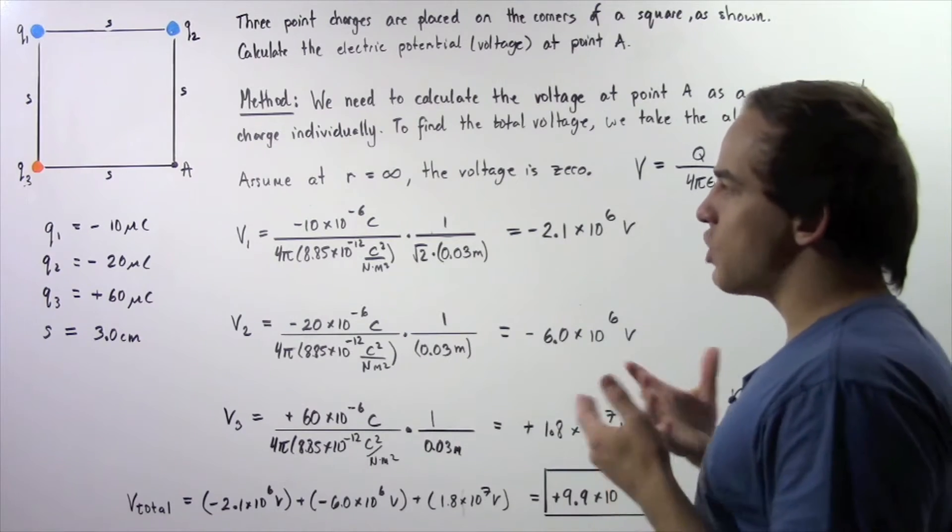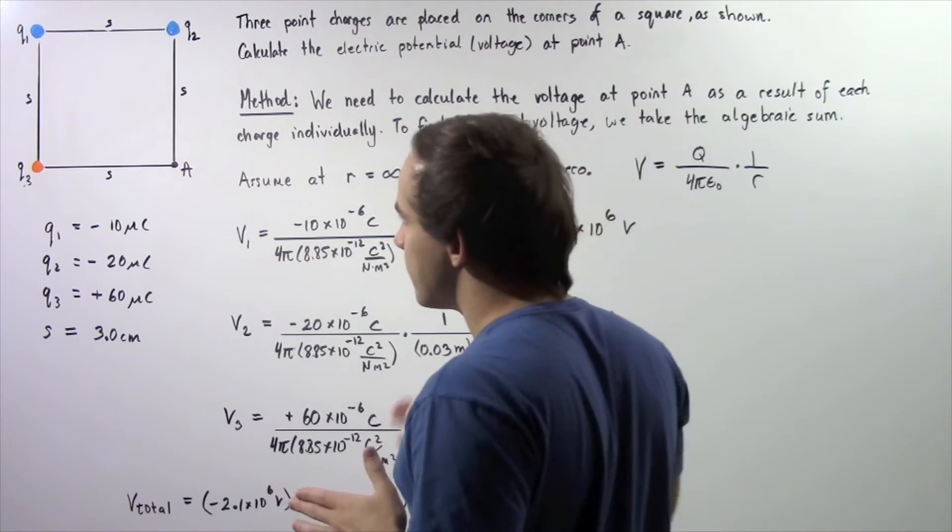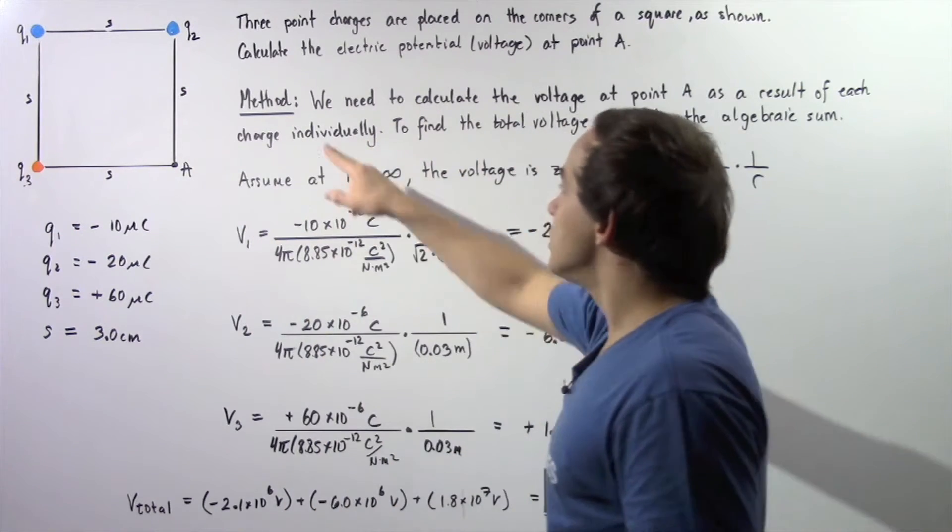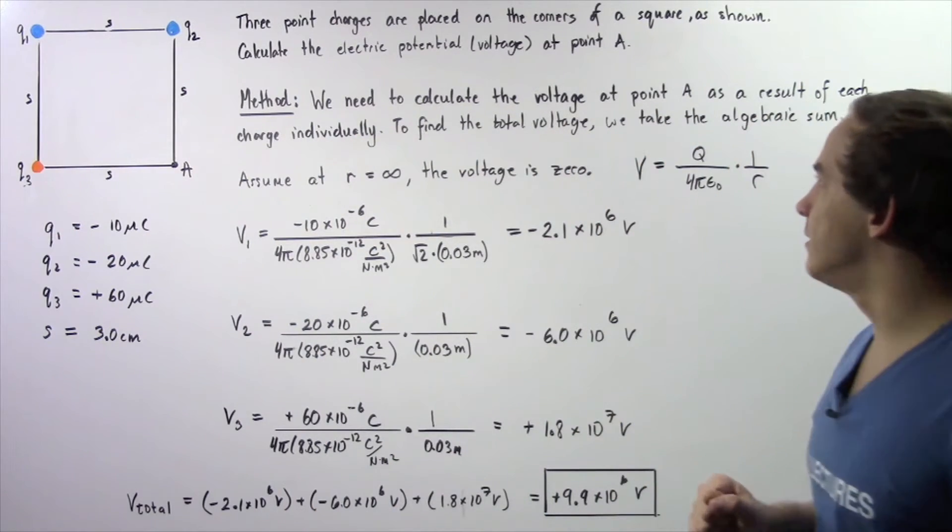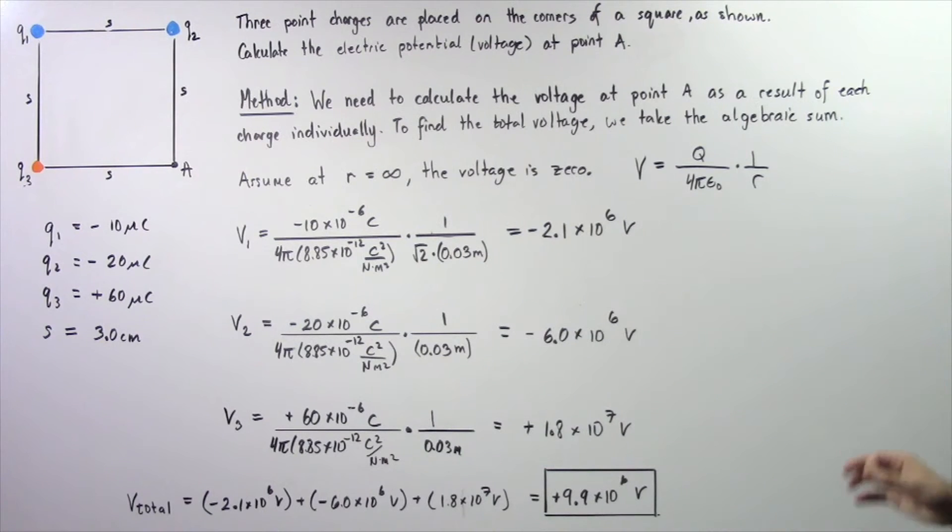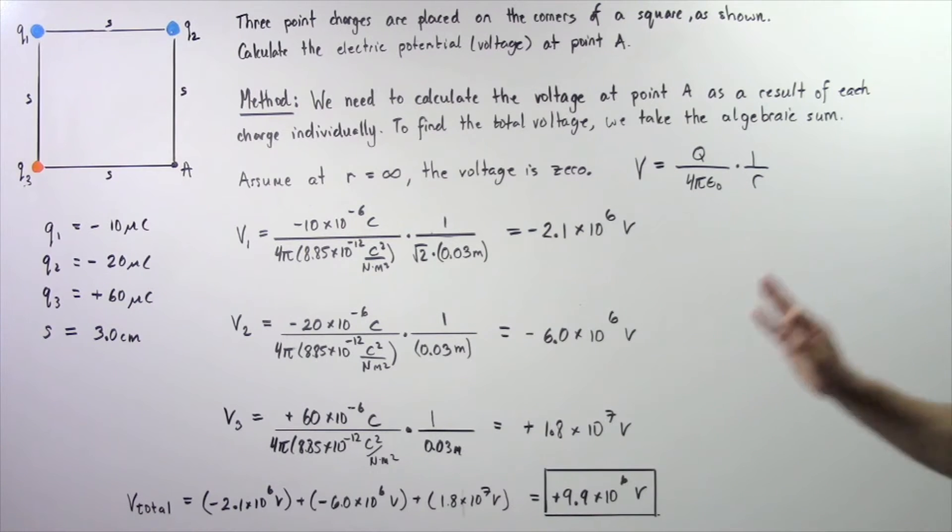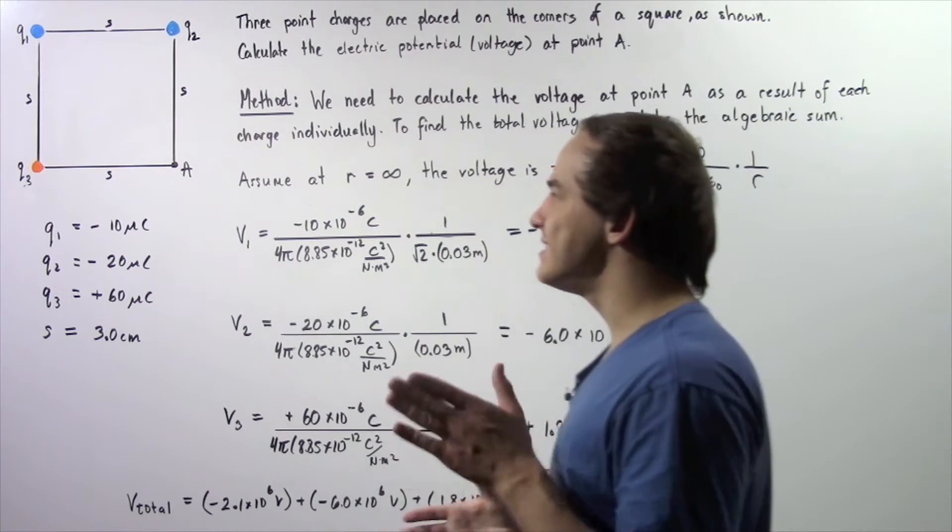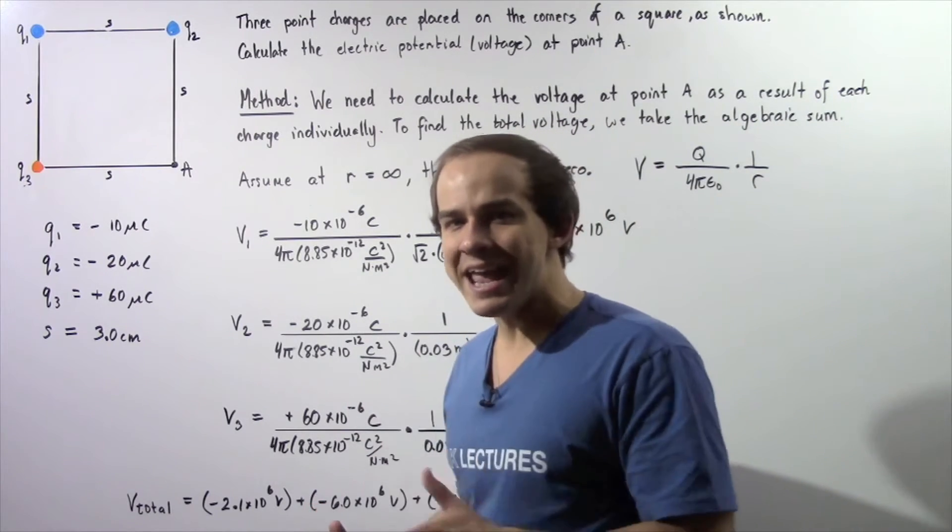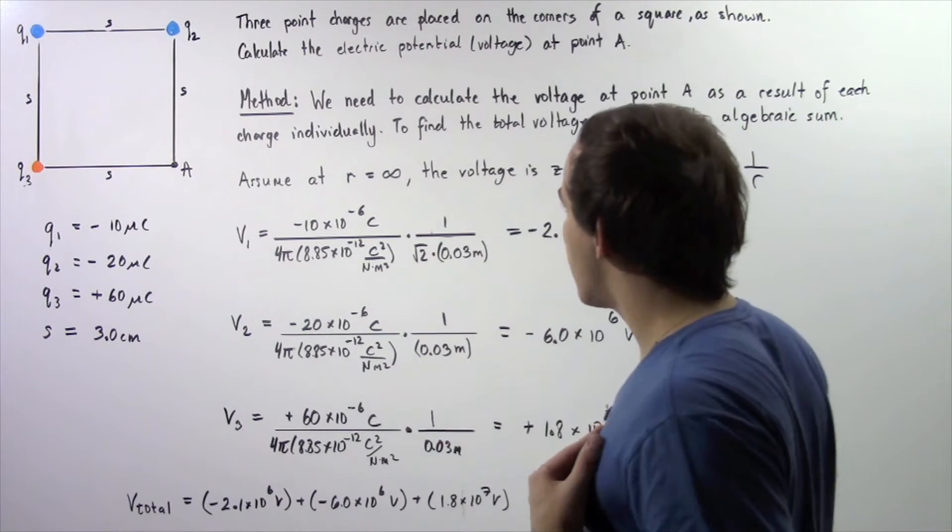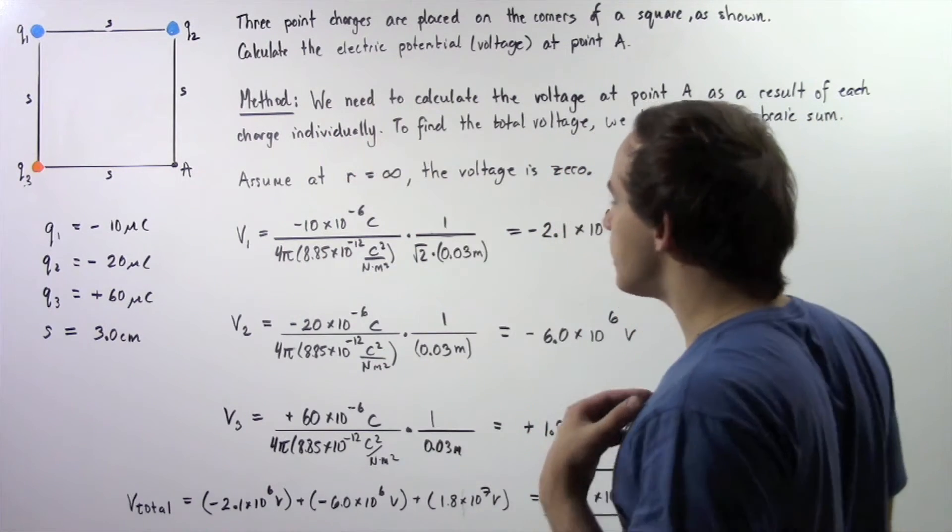How exactly are we going to calculate the voltage at point A as a result of these three point charges? We essentially need to calculate the voltage at point A as a result of each individual charge, and then to find total voltage, we simply take the algebraic sum. That's because voltage is not a vector, voltage is a scalar, and that means to find total voltage, we simply take the algebraic sum of all the voltages.